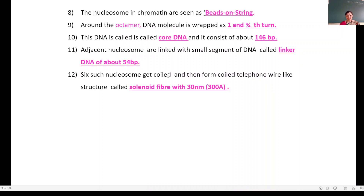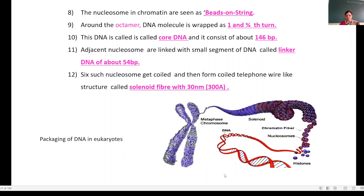Six nucleosomes get coiled to form a coiled telephone wire-like structure — this is an important point for MCQ. This is known as a solenoid fiber, which is 30 nanometers in size, that is 300 angstroms. From the diagram: this is the DNA double helix, histone proteins are present, histone proteins and DNA molecules form the nucleosomes, nucleosomes form the chromatin fiber, and then solenoid formation takes place, which is the telephone wire-like structure, and then chromosome formation takes place.